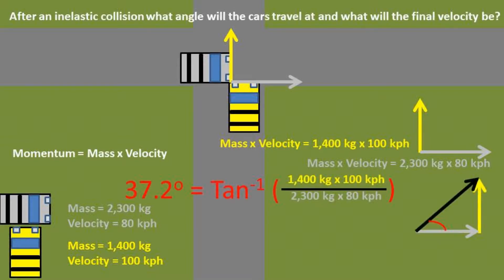We can now start solving for what the final vector angle will be. We can use the inverse of the tangent of the momentum of the yellow car over the momentum of the gray car. This results in the final angle after the collision of 37.2 degrees.